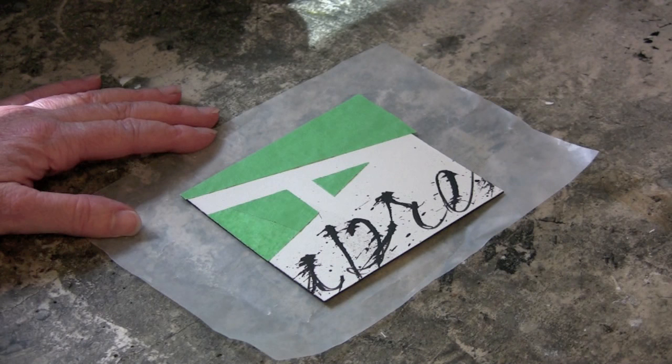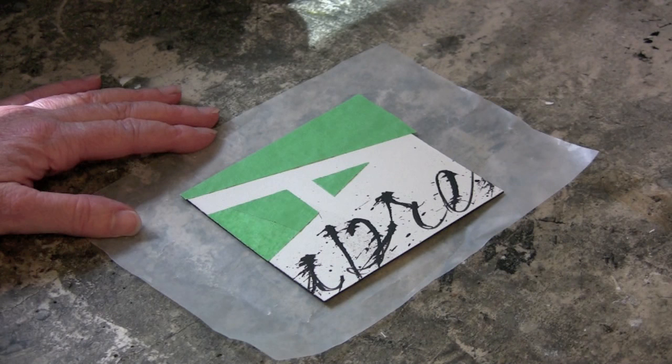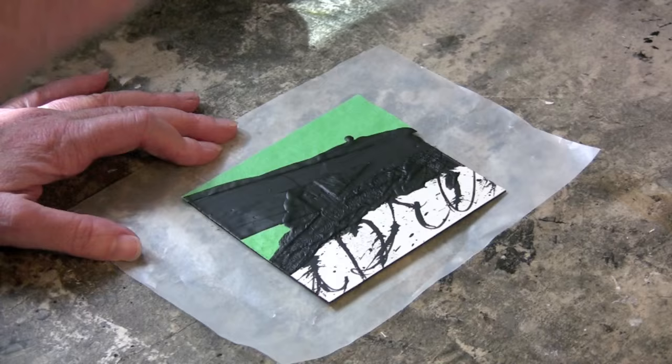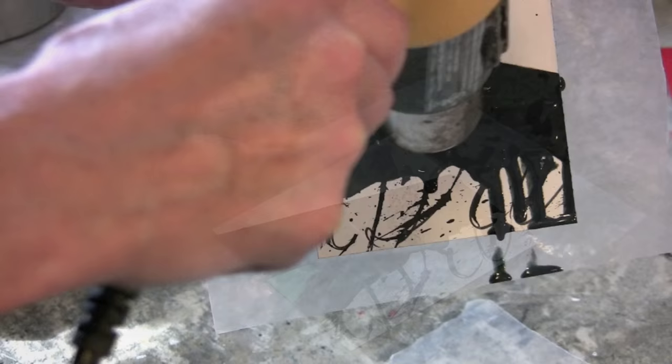With this one, I created a stencil for the letter A using painter's tape and am painting into that shape with some black encaustic paint. I'm removing the stencil before I fuse because I didn't want my tape to stick. I've got my panel at quite an extreme angle to create these drips on the right-hand side.